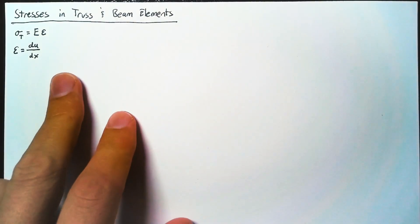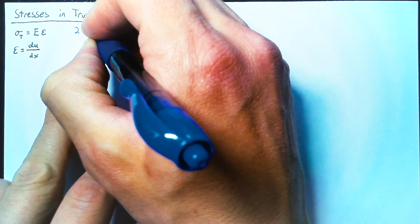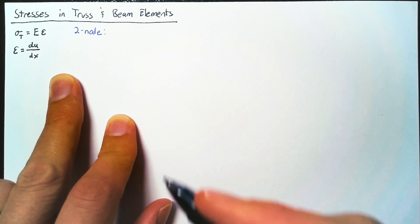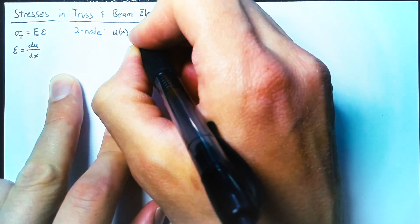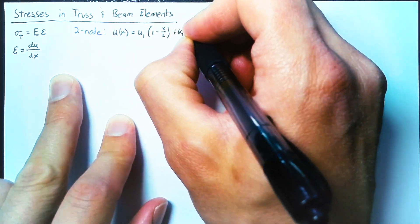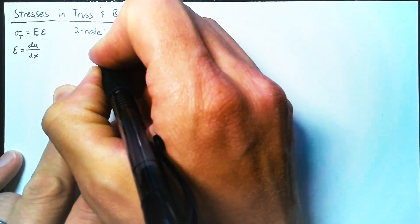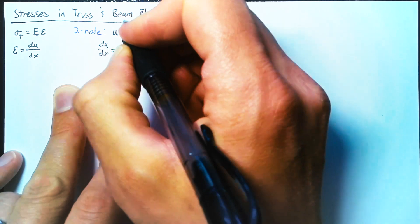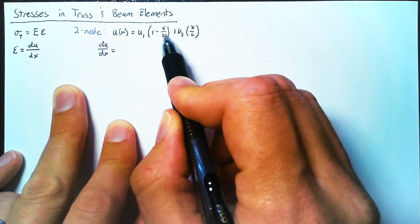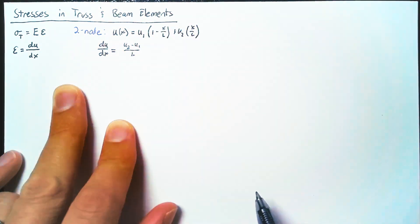Now this is dependent on the shape functions that we want to use. So if we look at our nice two-node element, we know that the displacement is equal to U1 times 1 minus X over L plus U2 times X over L. And so taking the X derivative of this, we end up with a positive U2 over L and a negative U1 over L. So we can write that as U2 minus U1 over L.